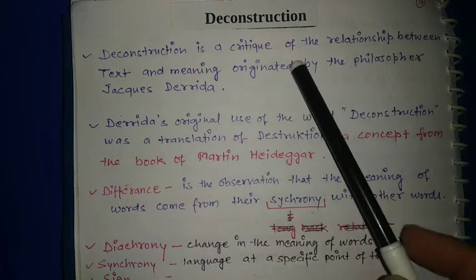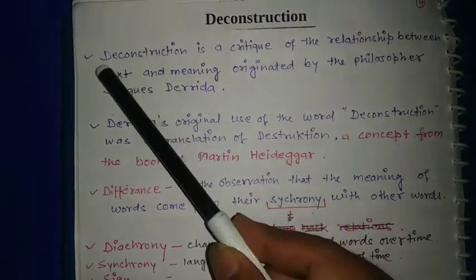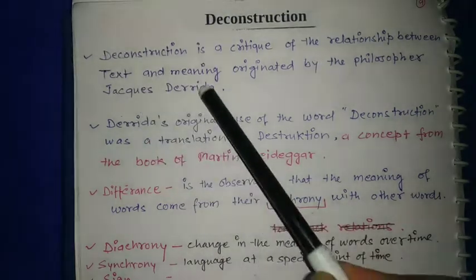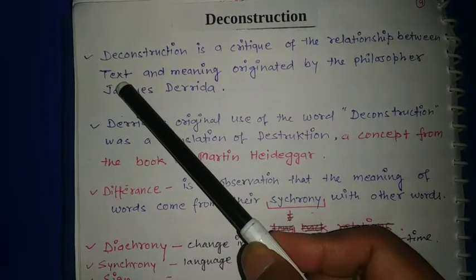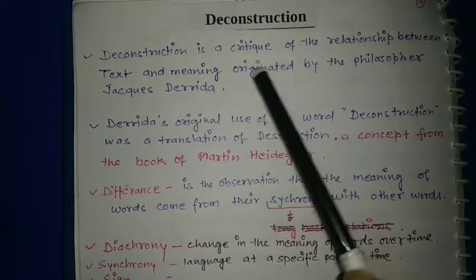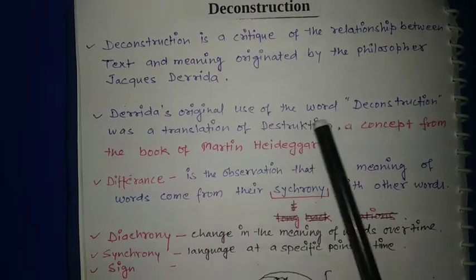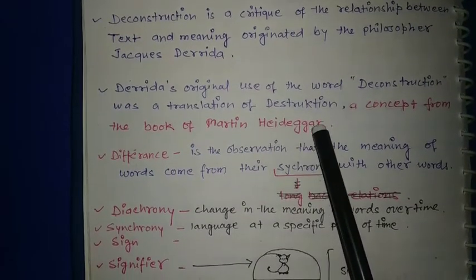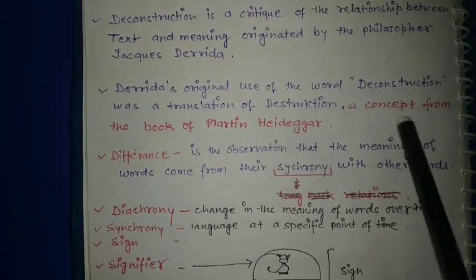Later, from Jacques Derrida, they considered the relation between text and meaning. Derrida's original use of the word deconstruction was a translation of a concept from a book by Martin Heidegger.